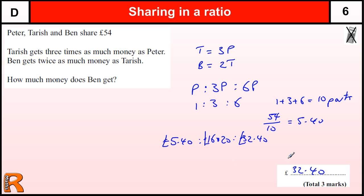So there's going to be marks for getting to this point where we work out there's ten parts, that'll be a method mark, then there'll be a method mark for getting to this £5.40 stage, and then there's an answer for multiplying it up, so £32.40.